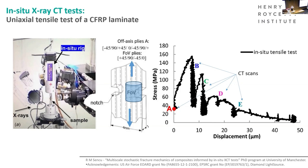We recorded a series of images: one before much load was applied, just enough to hold the sample, and then images at points B, C, D and E as we loaded the sample. The response of that sample deteriorated with damage. Because we wanted to look at the fibre level, we only looked at a small volume around that notch where damage was likely — about two millimetres in diameter — which allowed us to image those fibres at micron scale and see the six-micron carbon fibres.